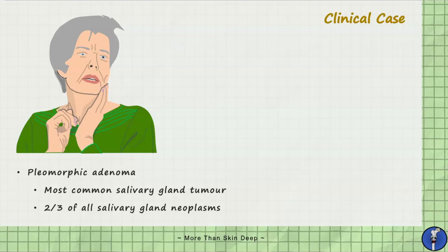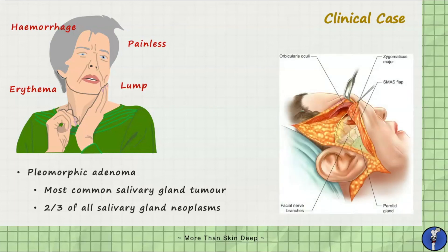Patients initially present with either a lump or enlarging mass which is often painless. As this continues to expand, it can infiltrate nearby vessels and tissues causing erythema or even haemorrhage. As pleomorphic adenomas commonly affect the superficial lobes of the parotid gland, a surgical procedure known as a superficial parotidectomy can be performed to surgically excise the parotid tumour.